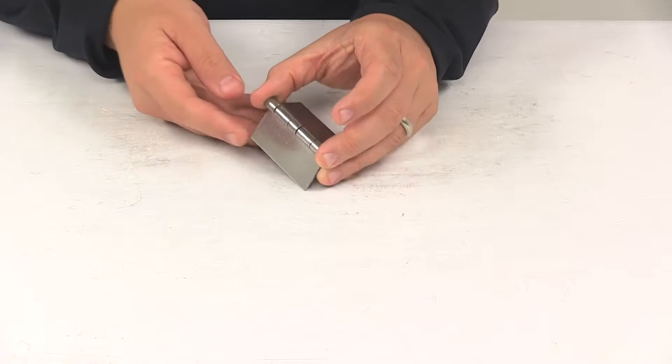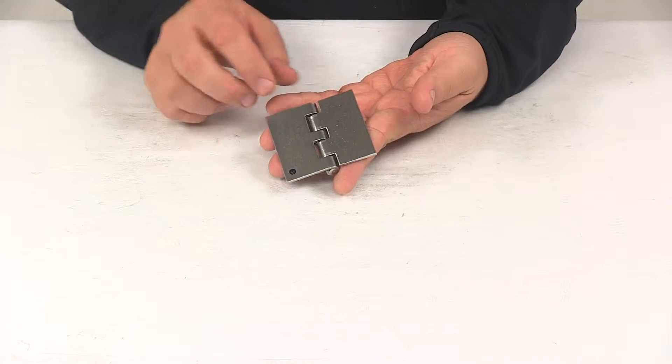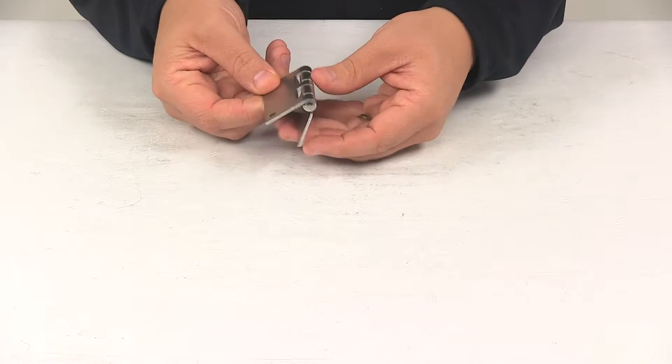Today we're going to be taking a look at the panel lock five knuckle butt hinge. The five knuckle butt hinge lets your door swing open and closed. It's got really nice movement to it.